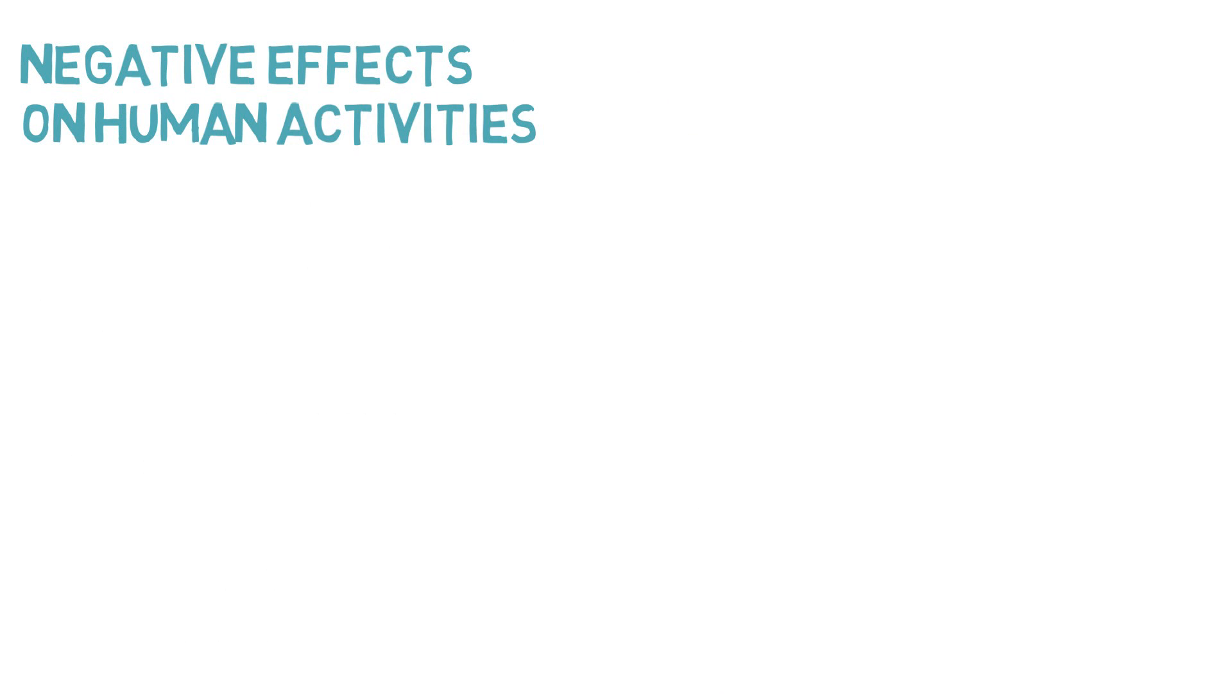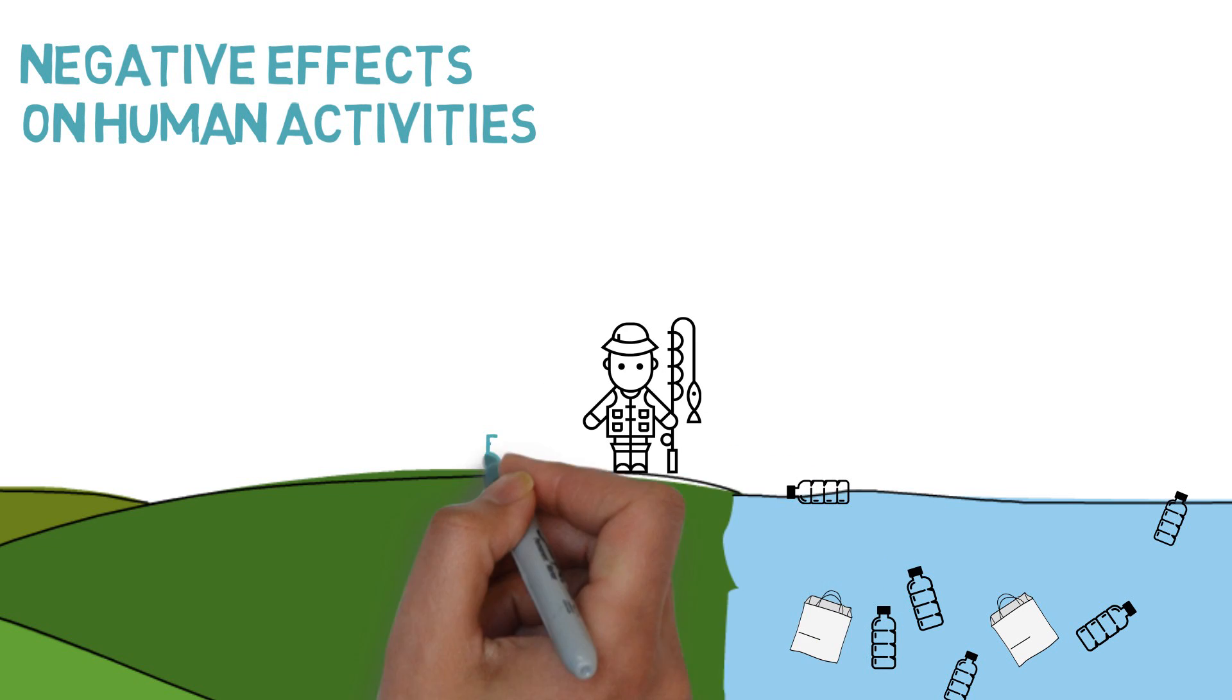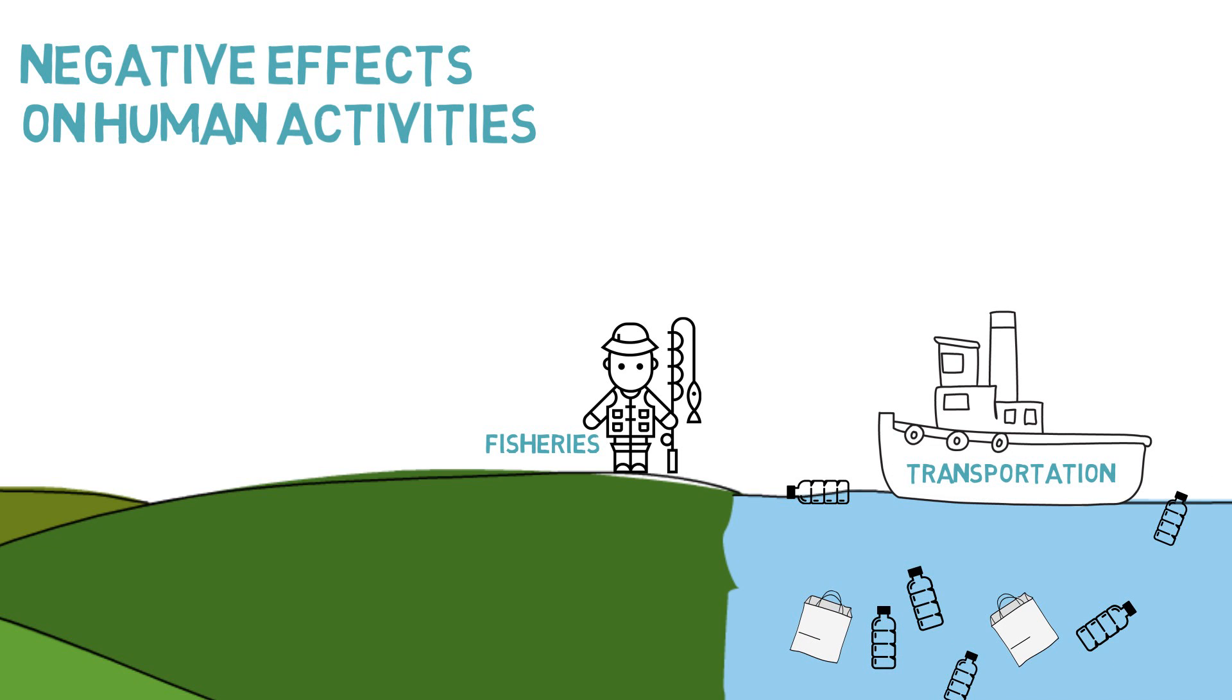Plastic pollution can have negative effects on human activities. Fisheries have to spend time removing the plastic from their nets. It affects transportation because it causes navigational problems, or tourism because it affects the perception of quality of the environment.